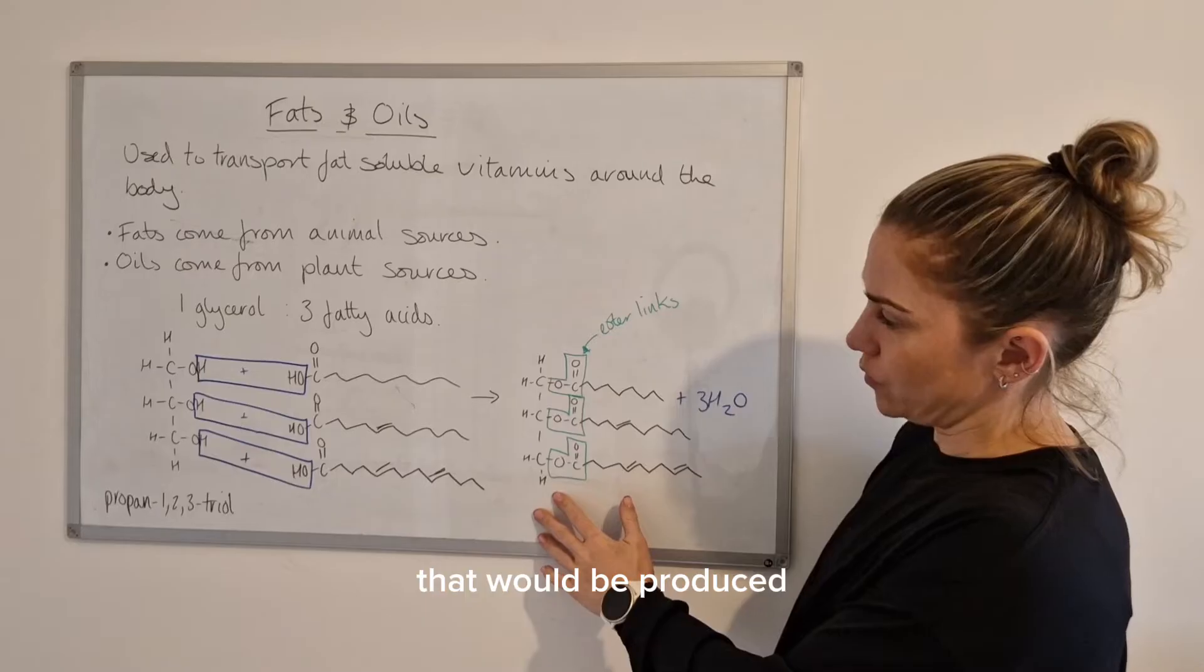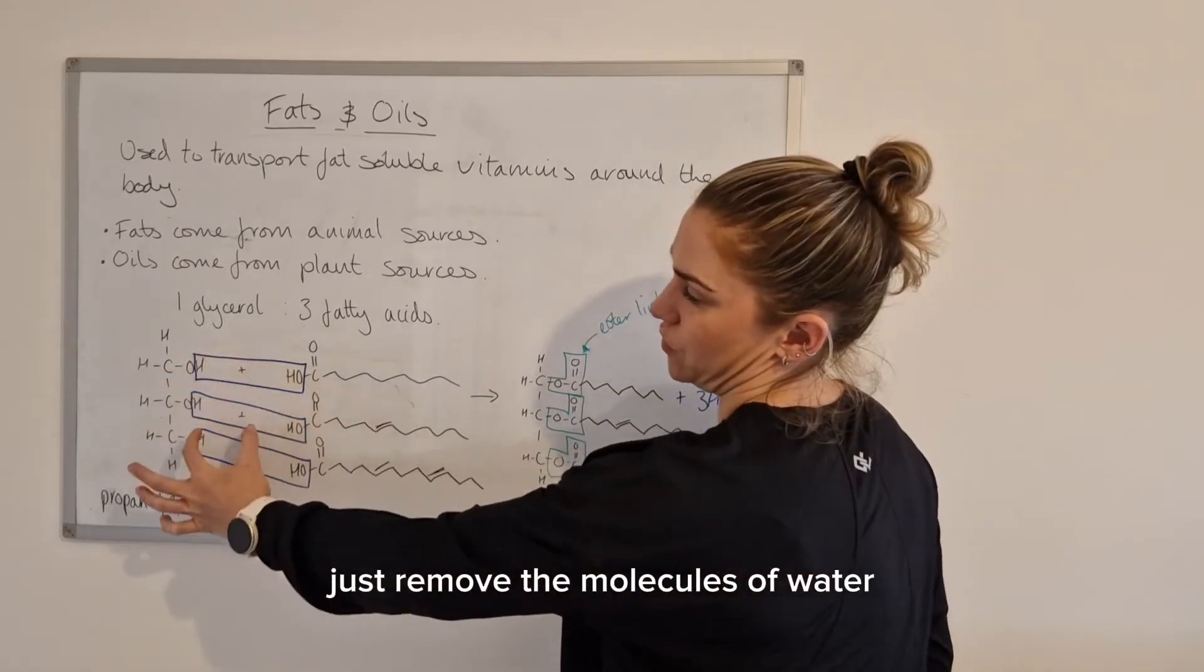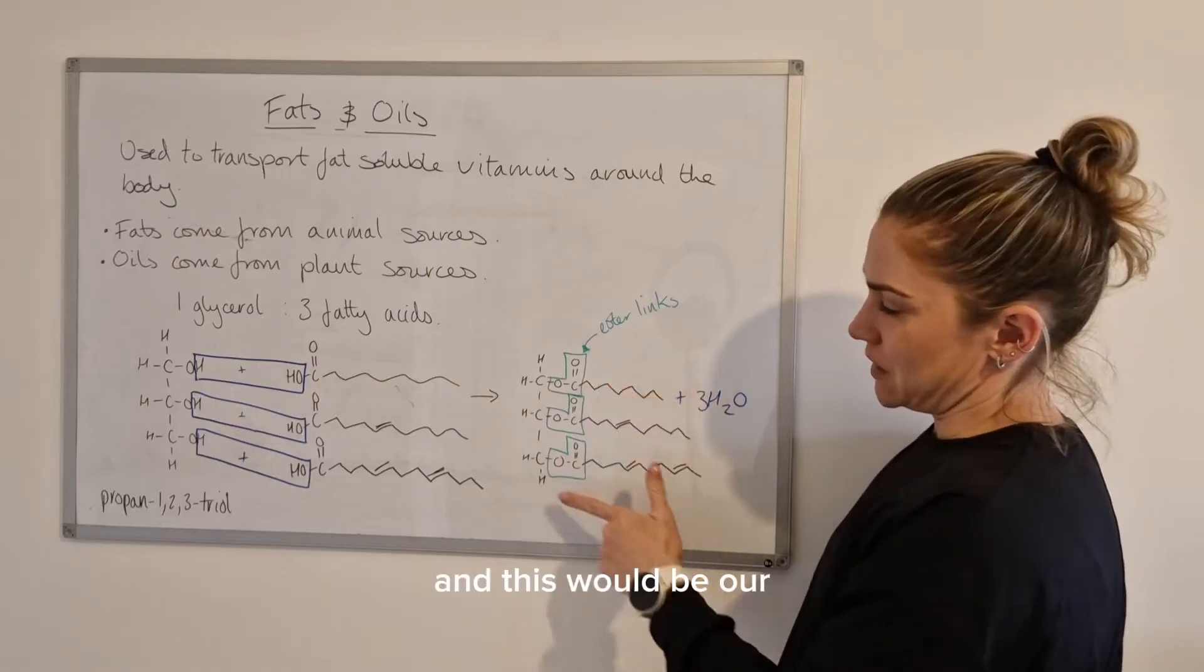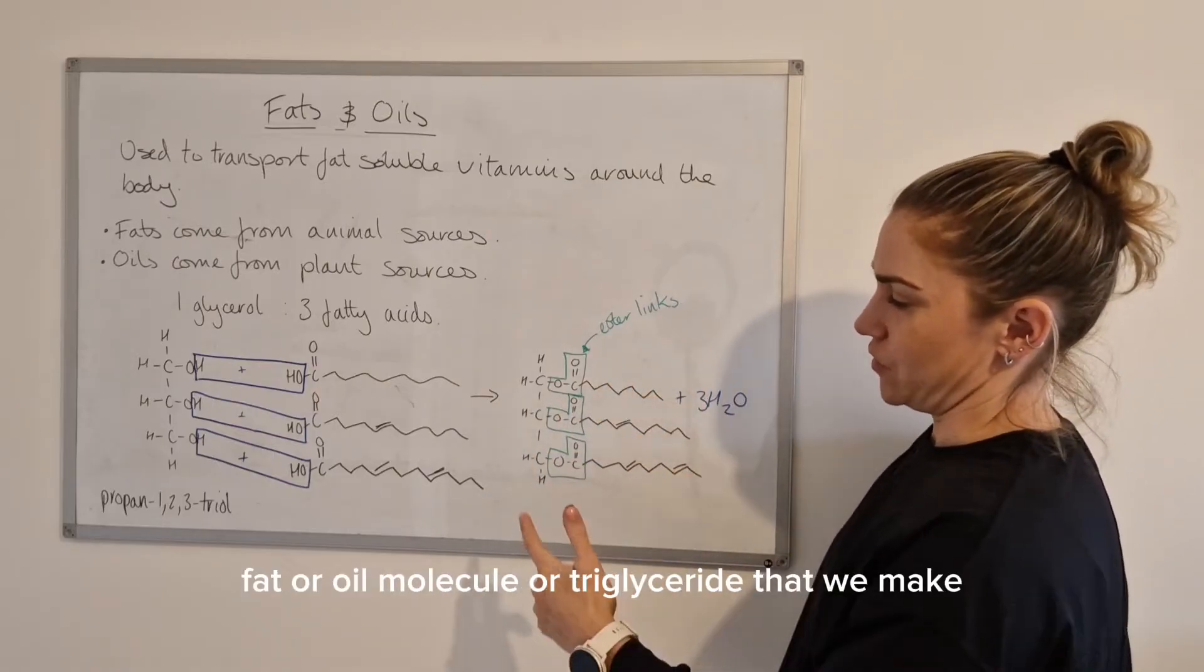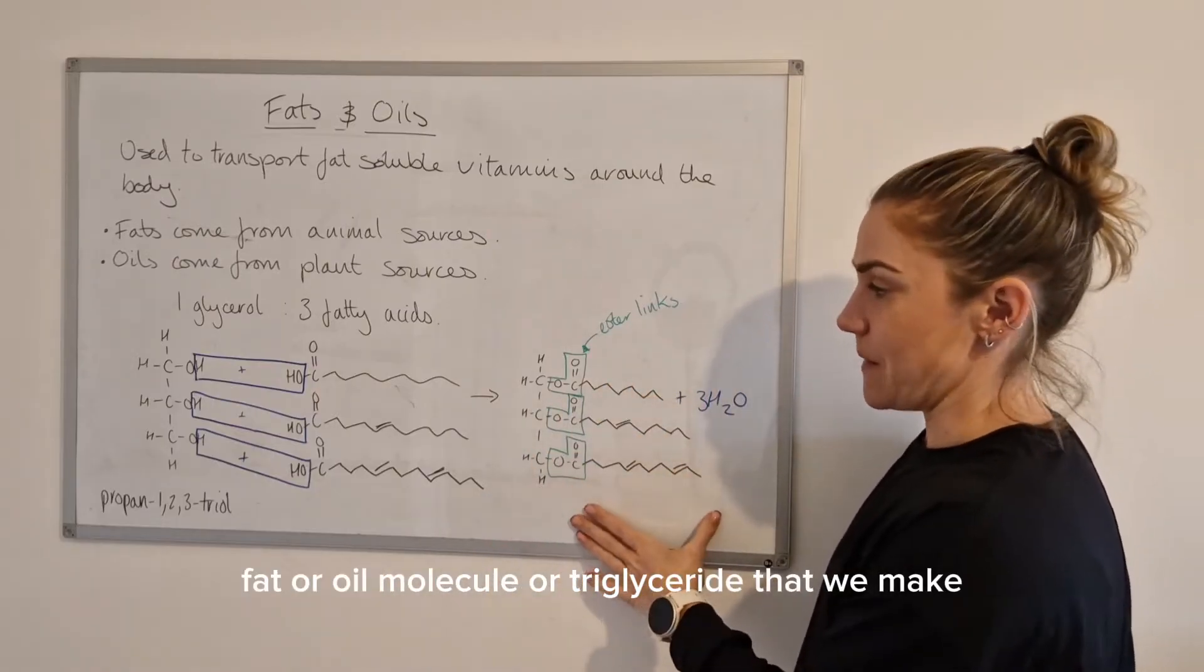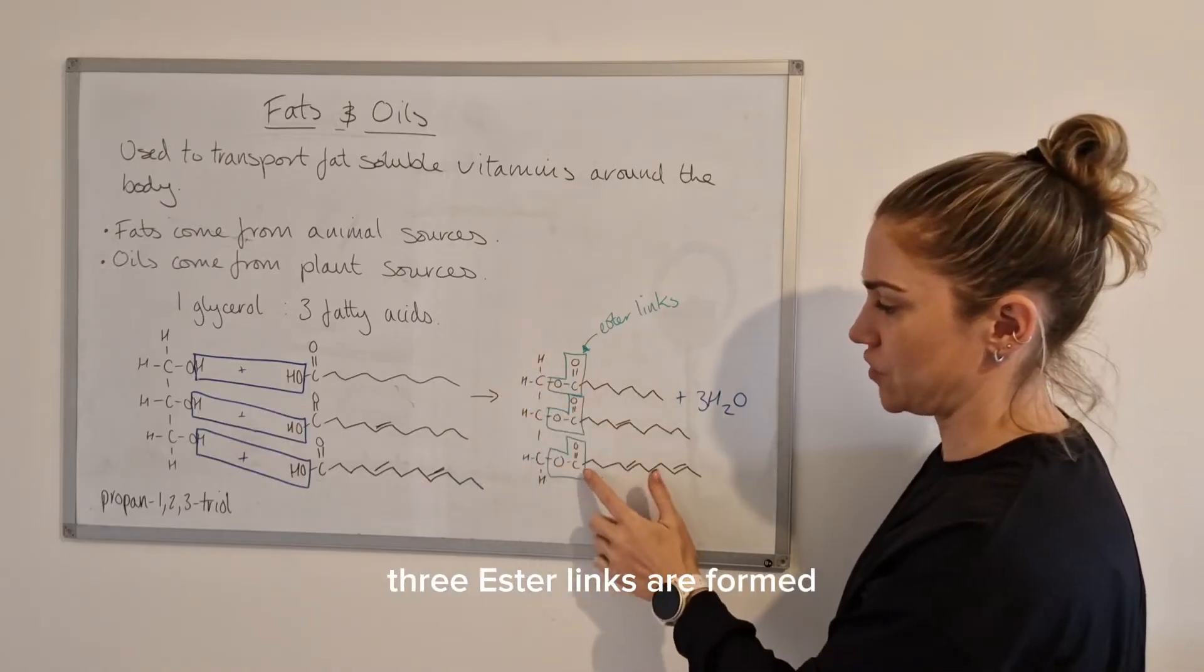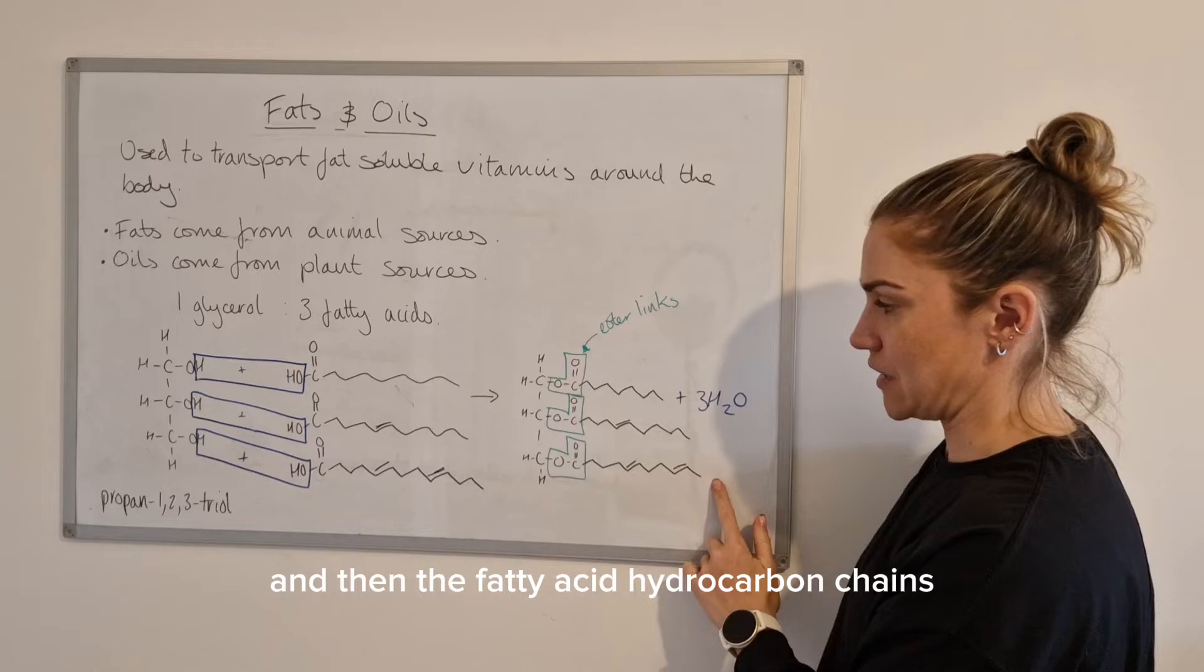I've drawn the fat molecule that would be produced - just remove the molecules of water and join that oxygen up to this carbon, and this would be our fat or oil molecule or triglyceride. You can see the glycerol backbone here, the three ester links that have formed, and then the fatty acid hydrocarbon chains.